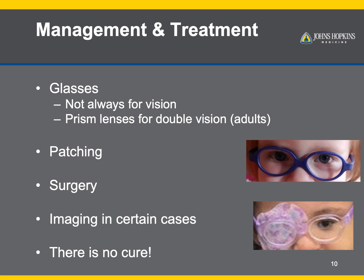However, if it starts to worsen, things such as glasses may be first considered to optimize vision if there is any need for glasses, or glasses can also be used to improve a child's control of the problem, which in this case would not be specifically just for vision. Patching may be necessary to improve vision in an eye that is being ignored by the brain. For example, if the left eye is drifting out constantly but not the right eye, we may patch the right eye to force the brain to use the left eye so that it does not get left behind.